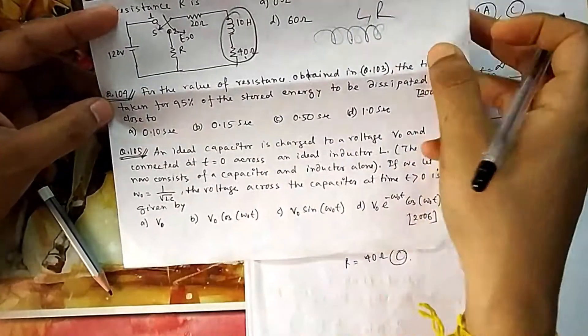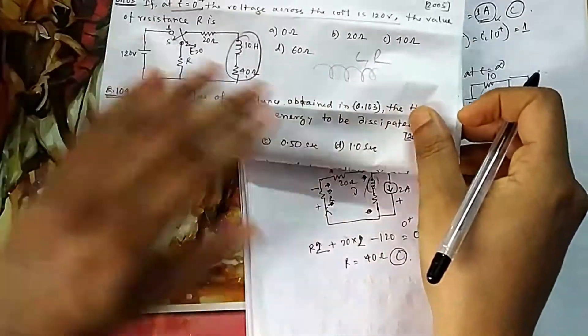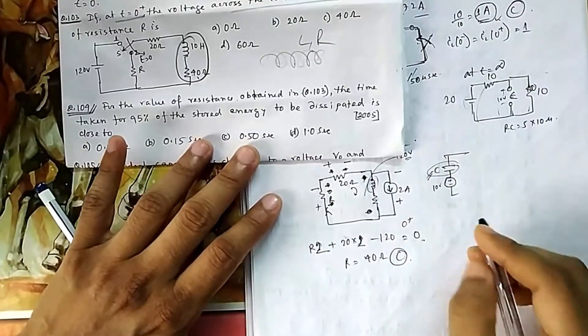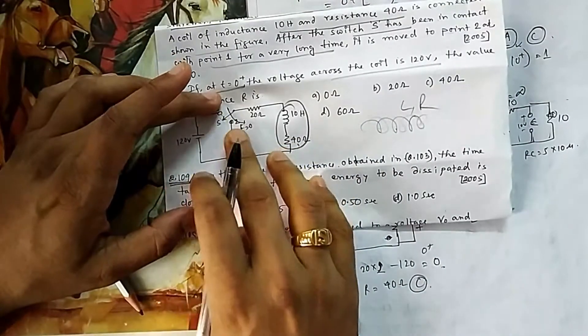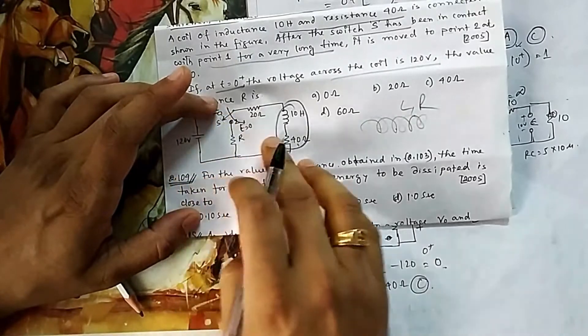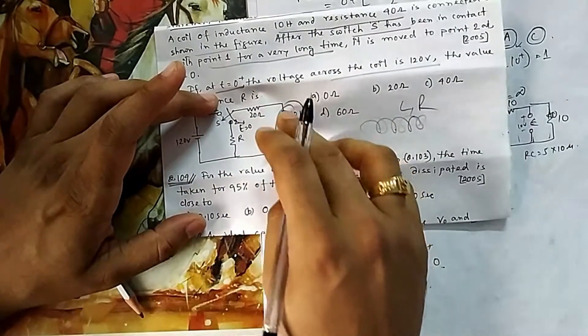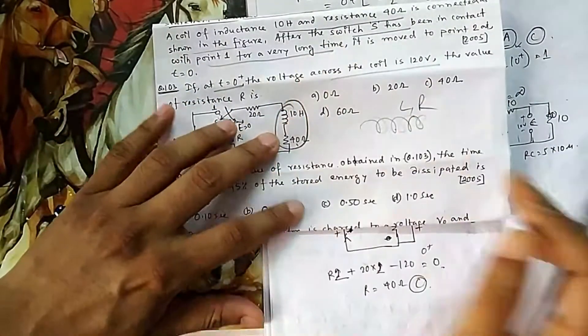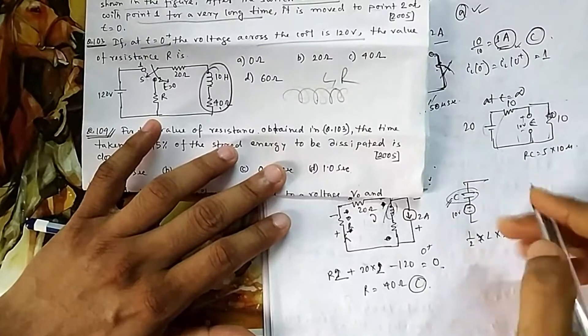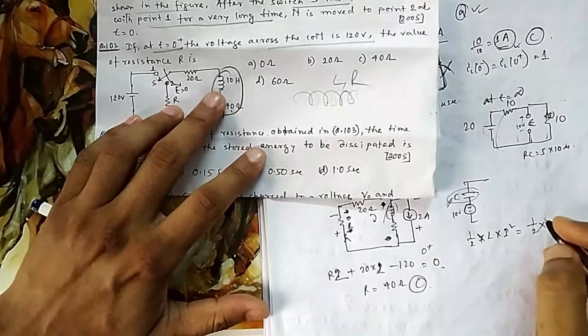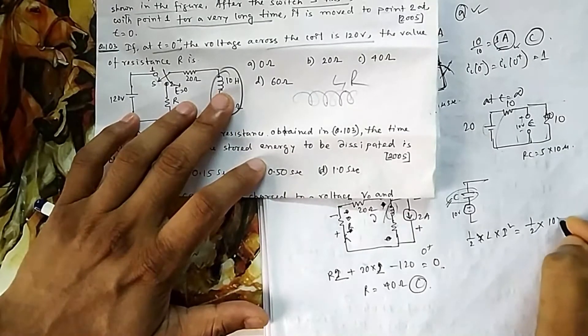For question 104, we need to find the time for 95% of the stored energy to be dissipated. When the switch was at position 1, the inductor stored energy with maximum current of 2 A. The stored energy is E = ½Li² = ½ × 10 × 4 = 20 joules. For 95% to be dissipated, 19 J must be dissipated and 1 J must remain.